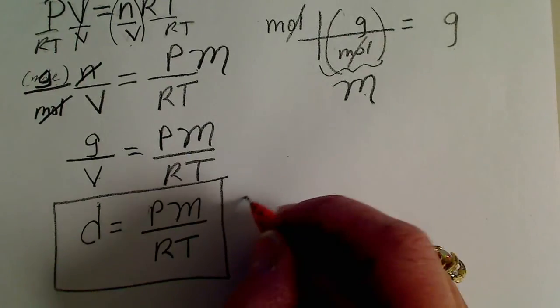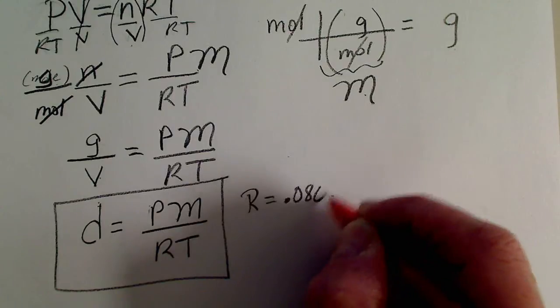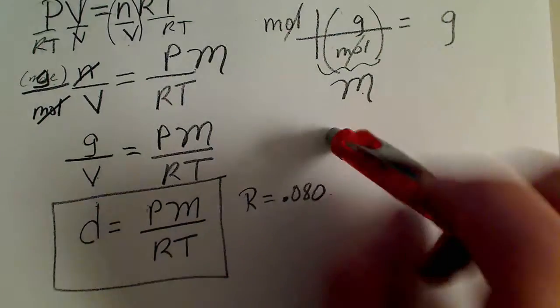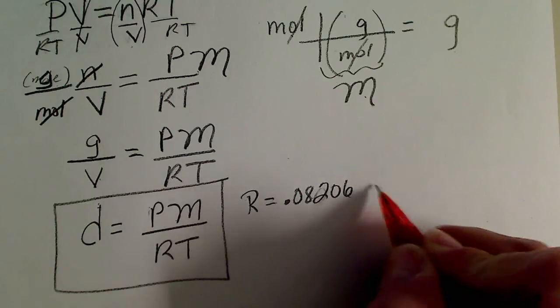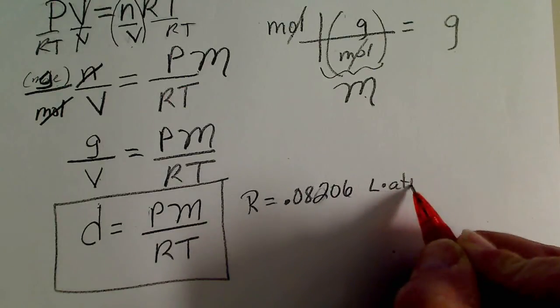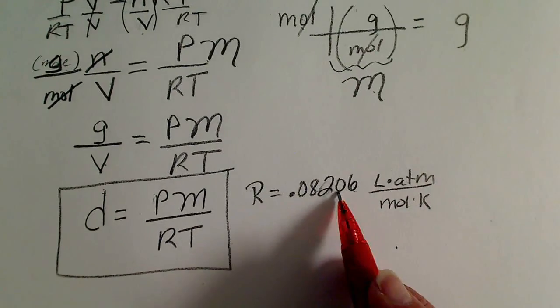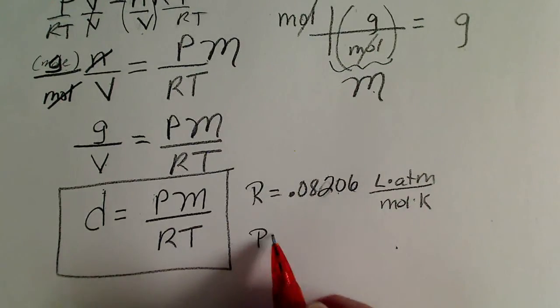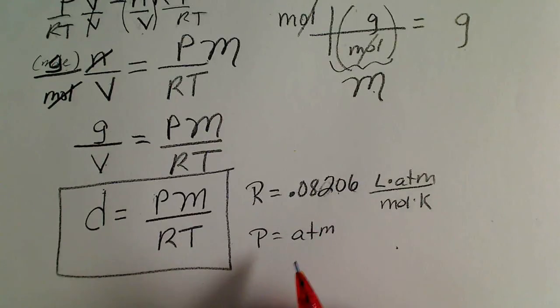And depending on what R constant we use, typically we use 0.08206. That is the liter atmosphere numerator. So if we use this R value, then our pressure needs to be in atmospheres, and our temperature always has to be in Kelvin.